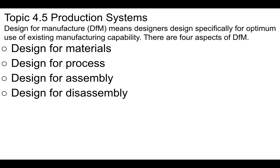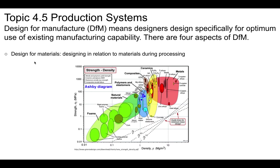Design for manufacture. This is where we are looking at ways to specifically optimize the manufacturing capability in four aspects: designing for materials, designing for processes, designing for assembly, and designing for disassembly. One of the things we might do as designers is design for the materials we're using — designing in relation to the materials during processing. You might pick particular materials that are available to you and design for those. For example, we have acrylic available in the design hub, so we may design something made out of acrylic. We don't have polycarbonate, so we can't design for that.